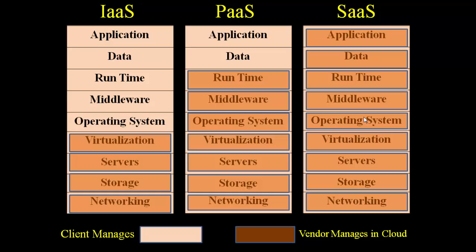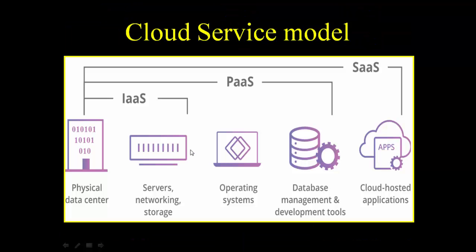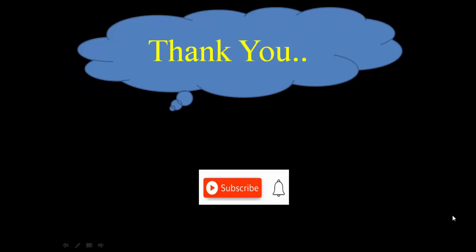So this is the comparison between IaaS, PaaS, and SaaS. To conclude: if you go for IaaS, the cloud manages the physical data center, servers, networking, and storage. For platform as a service, it includes that infrastructure plus operating system, database management, and development tools. For software as a service, the cloud provides full software and everything is managed by the cloud. This is all about cloud service model — I hope this video is useful to understand cloud service models. Thank you.